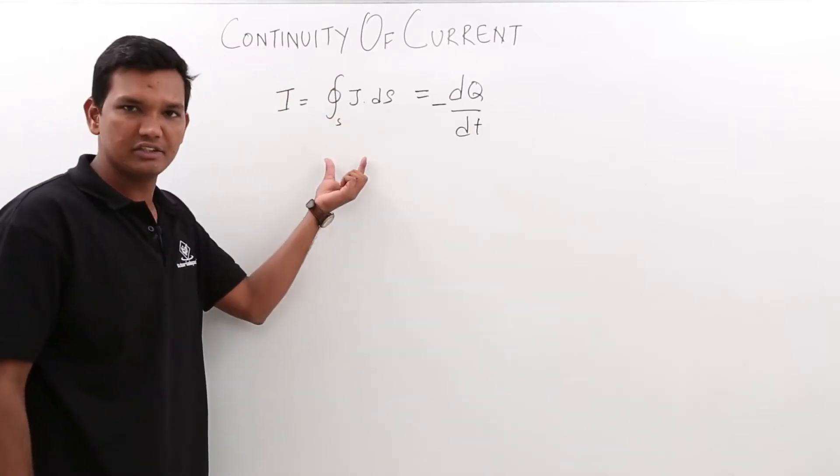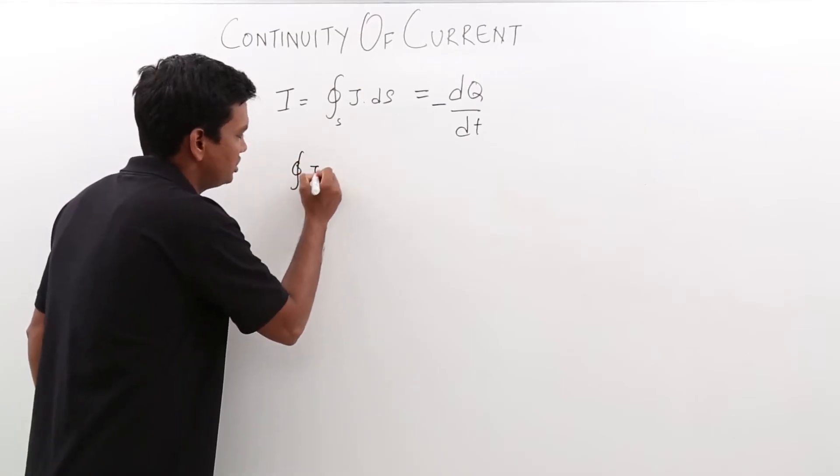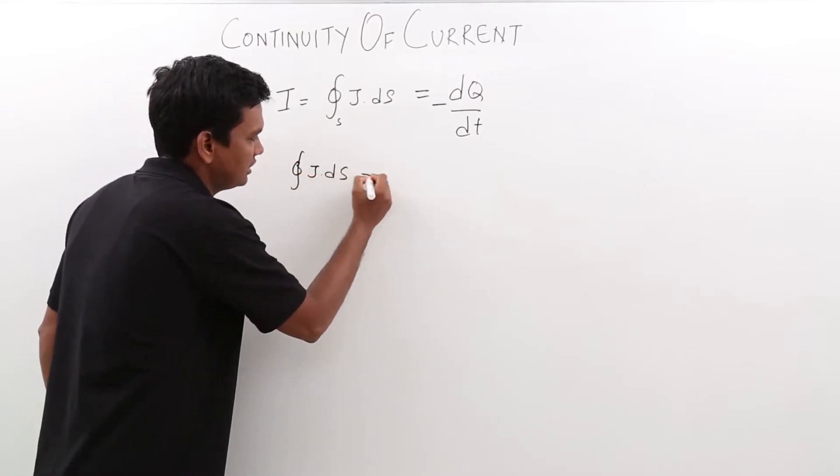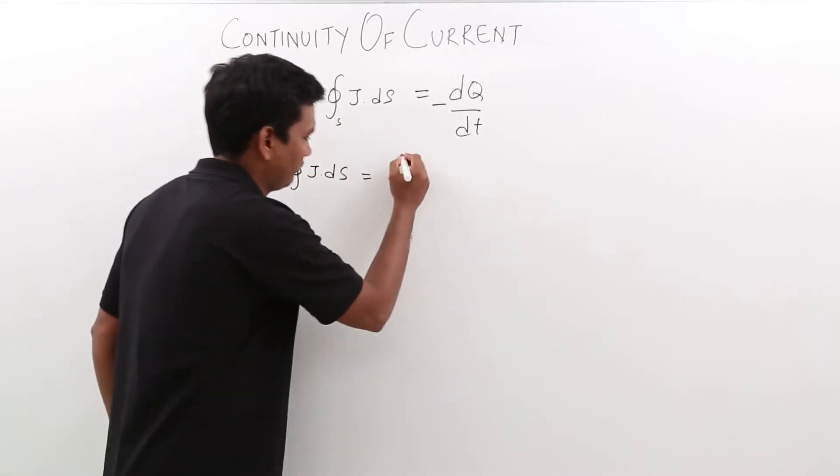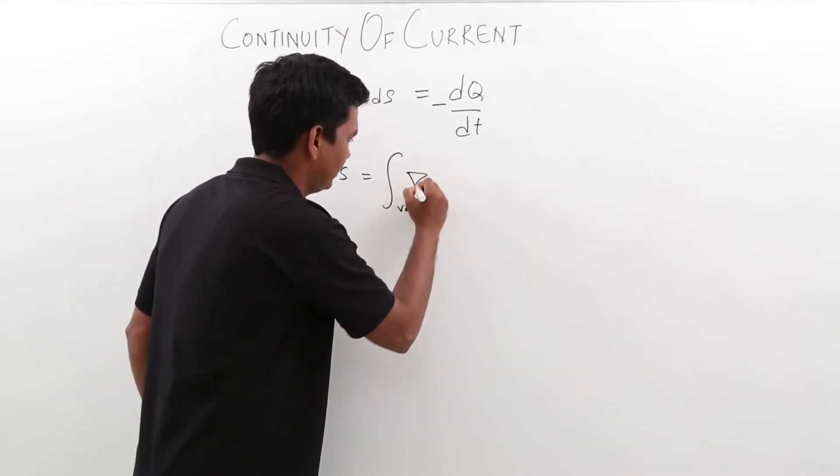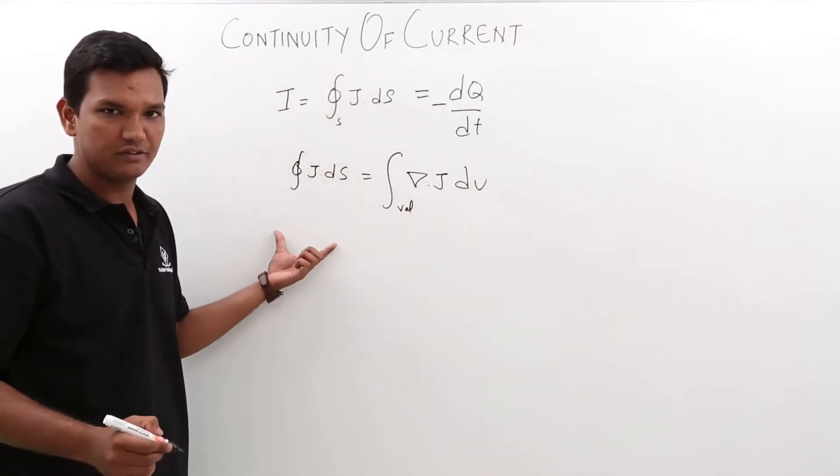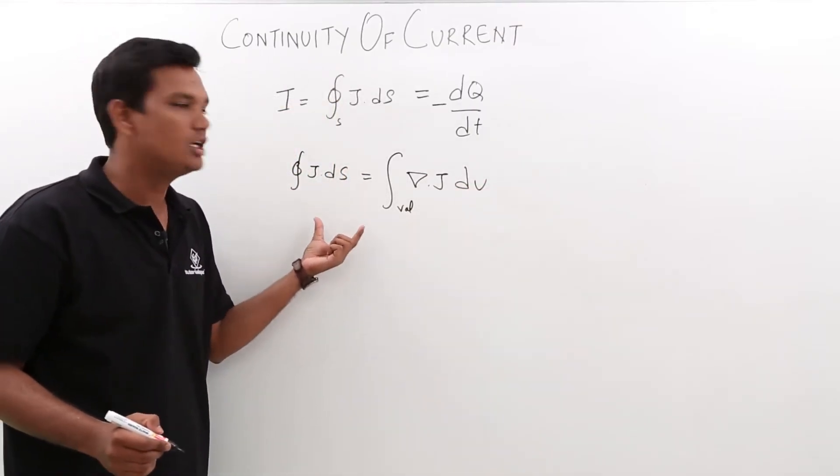From the Gauss divergence theorem, we also know that the surface integral j dot ds is equal to the volume integral of del dot j dv. This is from Gauss divergence theorem, which we have already seen in the previous classes.